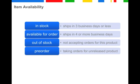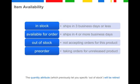For availability, we have four predefined values and you have to submit one of the four values for every item you submit. An important note: the quantity attribute, which lets you specify out-of-stock items, will be retired. From now on, please use the availability attribute to specify any out-of-stock items.